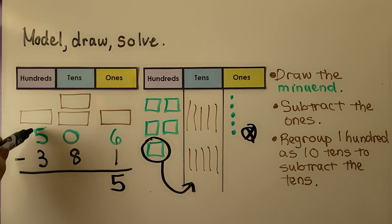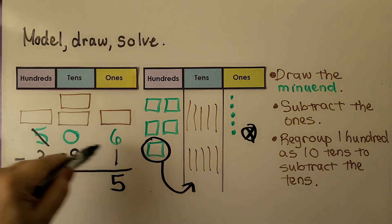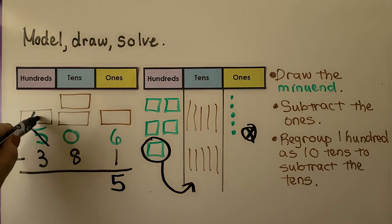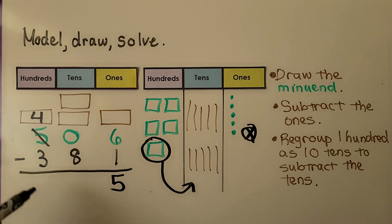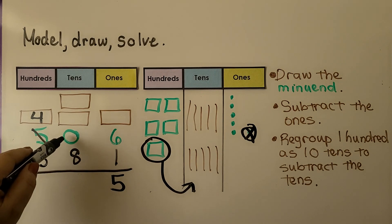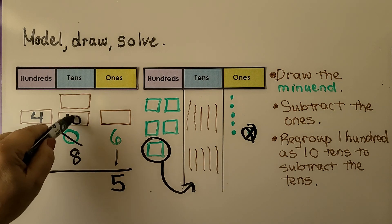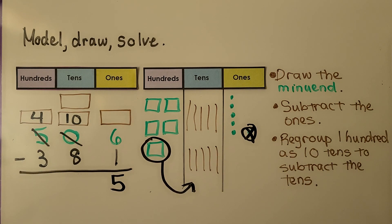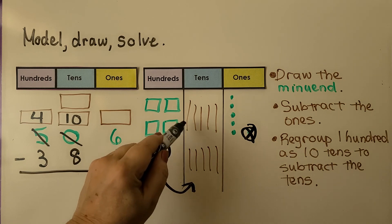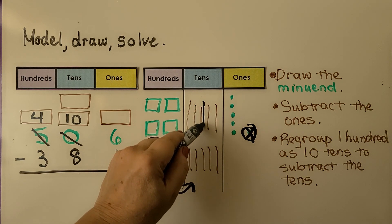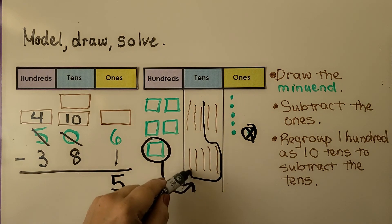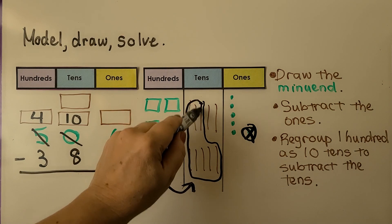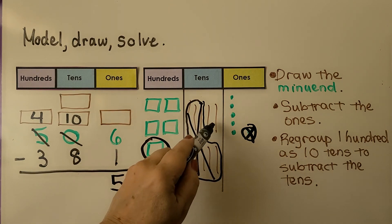We took away this hundred. Now we have four hundreds. Instead of zero tens, we now have ten tens, and we can do ten minus eight. We count five, six, seven, eight. We're going to take these away. That leaves two tens.